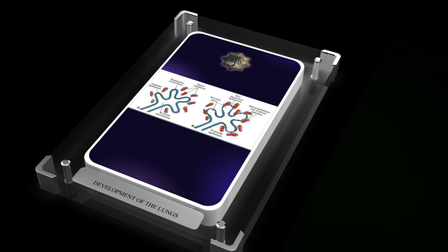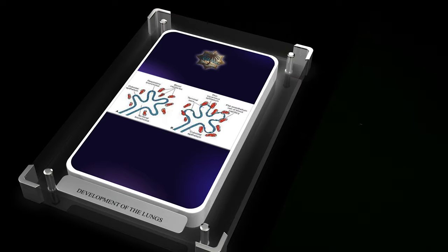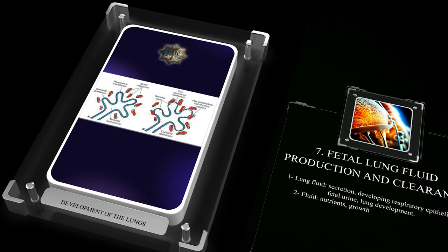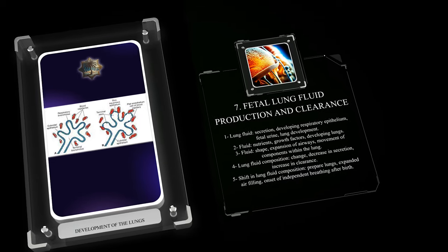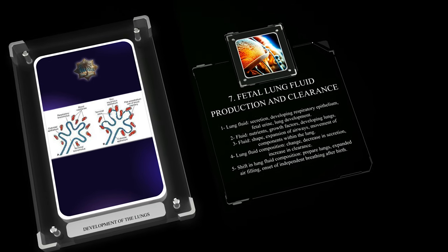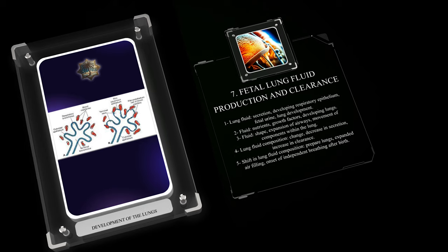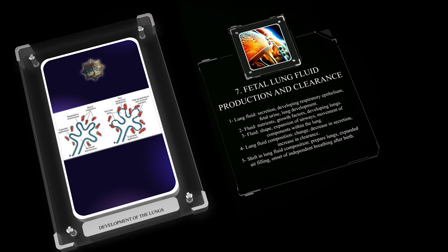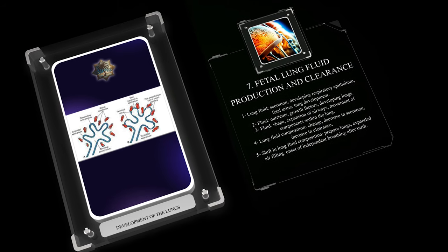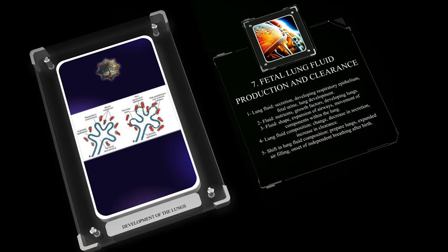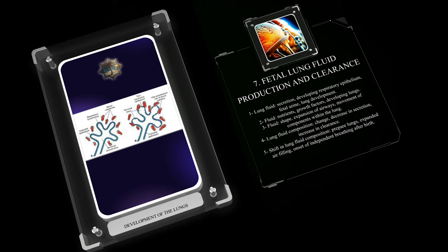Lung fluid, primarily composed of secretion from the developing respiratory epithelium and fetal urine, plays a vital role in lung development during the fetal period. The fluid serves multiple purposes, including providing essential nutrients and growth factors to the developing lungs, maintaining the shape and expansion of the airways, and facilitating the movement of various components within the lung. As the fetus approaches term, the lung fluid composition changes, with a decrease in the secretion of lung fluid and an increase in its clearance. This shift prepares the lungs for expanded air filling and the onset of independent breathing after birth.